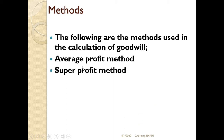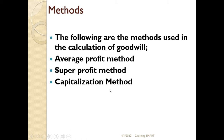Number one is the average profit method. In the average profit method, there are two sub-methods: one is the average method and two is the weighted average method. Number two is the super profit method. Then number three is the capitalization method. So there are three methods which are normally used in the preparation of goodwill.